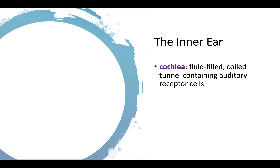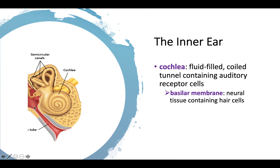Now we have the inner ear. The cochlea is the important structure here — it is fluid-filled and a coiled tunnel containing auditory receptor cells. The basilar membrane is neural tissue containing hair cells. We've got this snail-shaped cochlea — it always makes me think of the little seashell where Ursula captures Ariel's voice. Along the cochlea we have a strip that coils through it, the basilar membrane. These little hairs are the receptor cells that pick up auditory information.